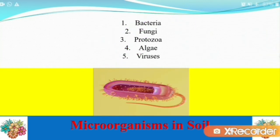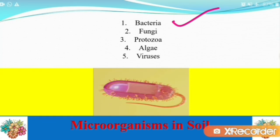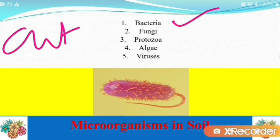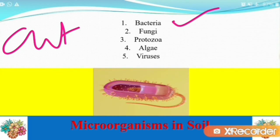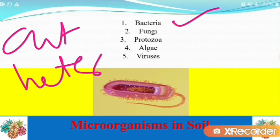First is bacteria. Many types of bacteria are found in the soil. Some are heterotrophic and utilize organic compounds for their energy and growth. The majority of bacteria are heterotrophic in nature and utilize large amounts of organic matter.